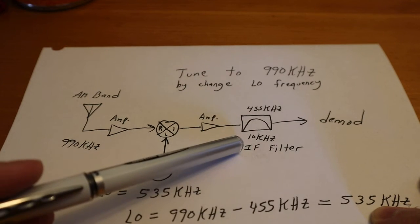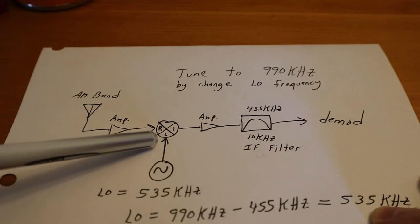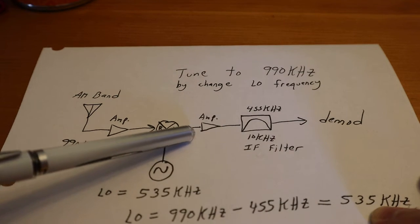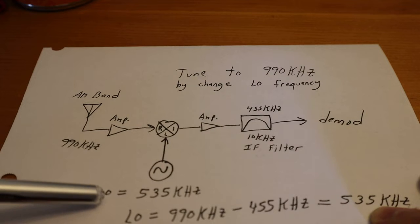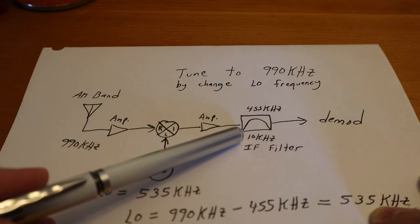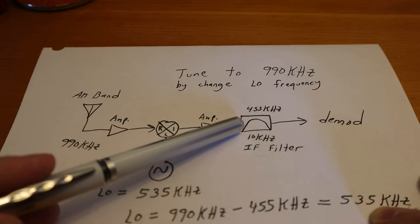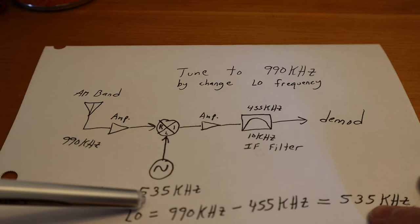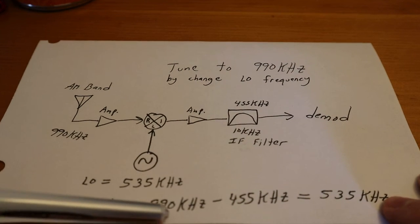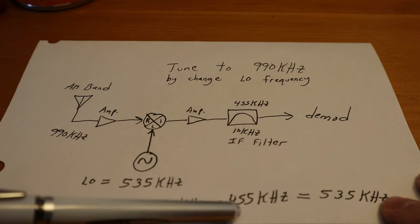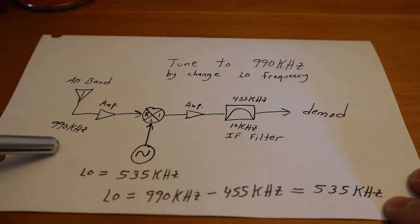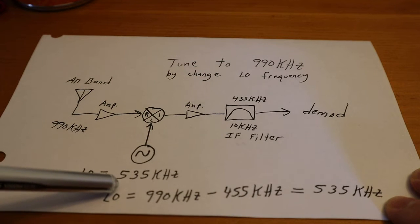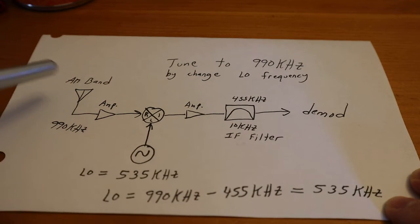So here, this filter is picking out the difference. Remember I said this mixer here is going to have the sum and the difference of these two frequencies. So since we have this fixed IF filter, or intermediate frequency, centered at 455 kHz, we need to make an LO such that the 990 minus 455, that's the LO frequency. So if you were to take 990 and minus 535, you would get 455.